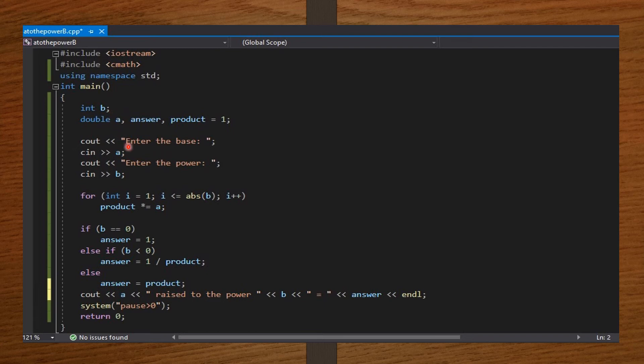Then, I take the input from the user that is the base and then the power a and b. Then, I set the for loop that is going to calculate for the product. Then, I set the if statement that if b was 0 or if b was a negative number or if b was a positive number.